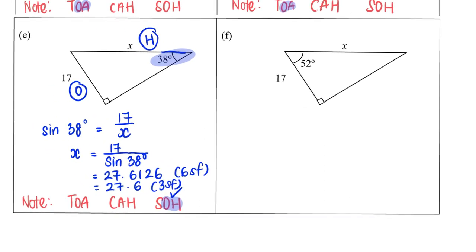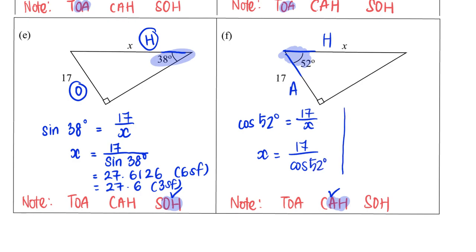Now the last example, which I will do pretty fast. Angle 52, this will be my adjacent side, this is my hypotenuse. So with A and H, cosine. Cosine 52 degrees equals A over H, which in this case is x. So my x equals 17 divided by cosine 52 degrees. Therefore x will be 27.6126 to six significant figures, followed by three significant figures.